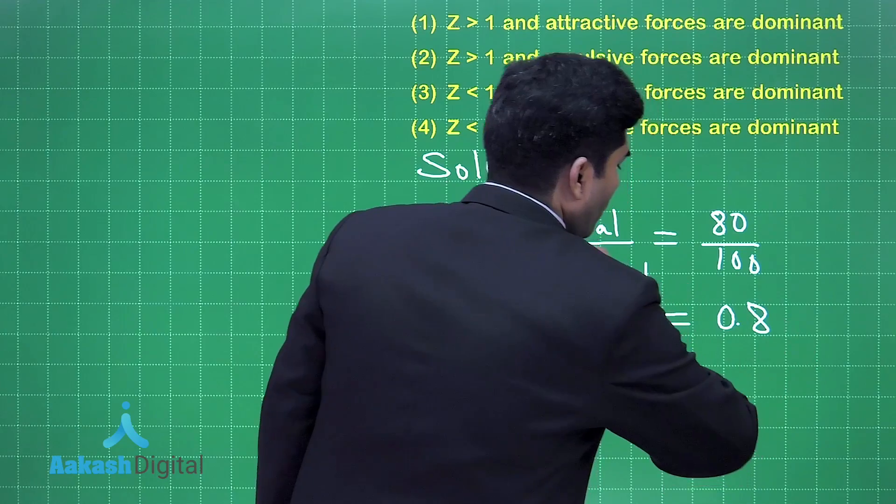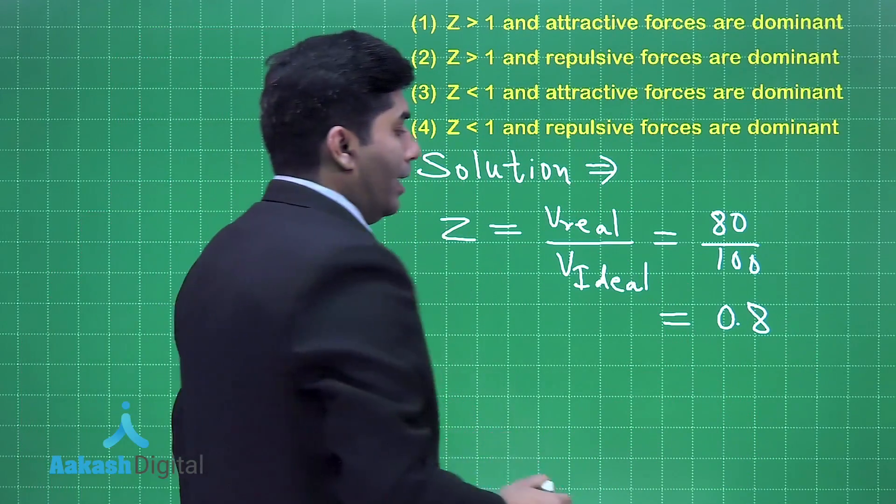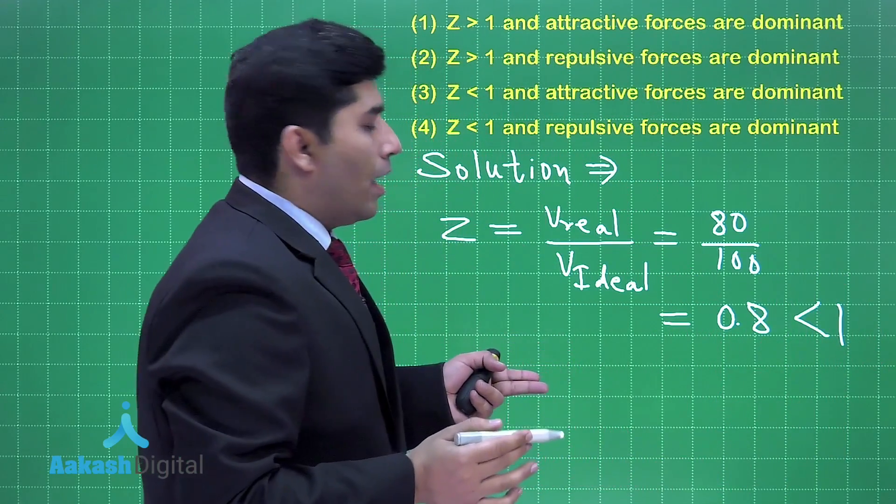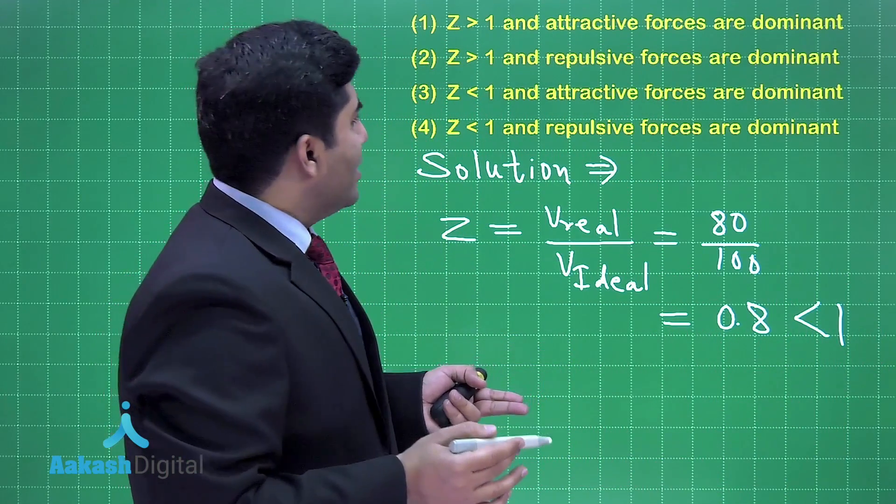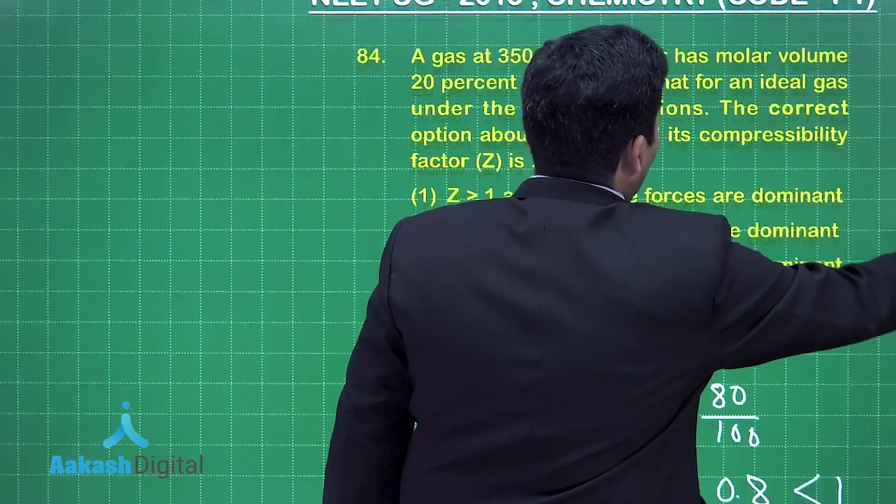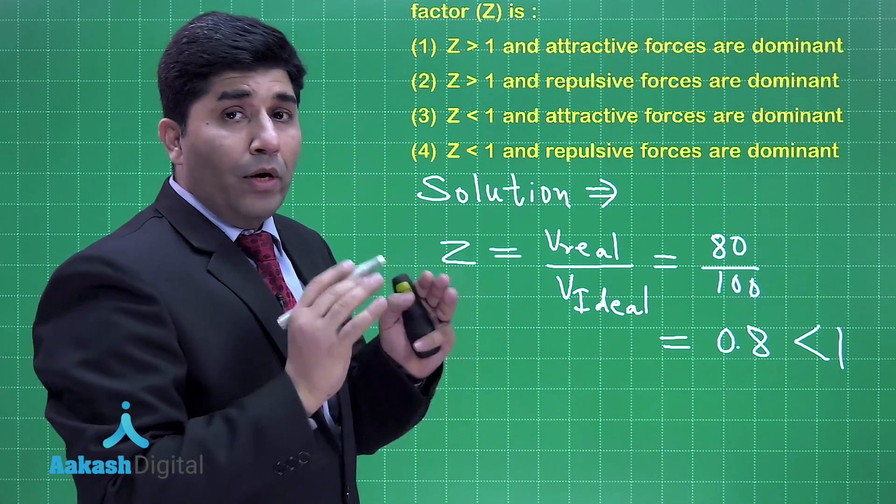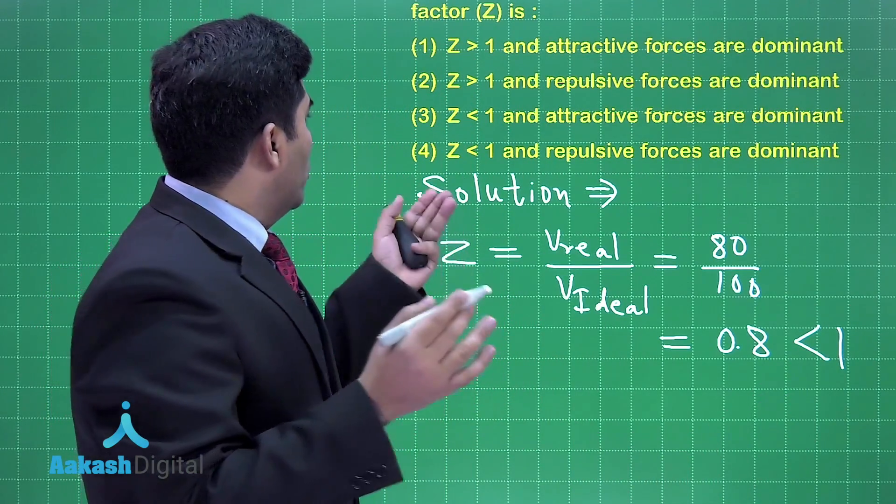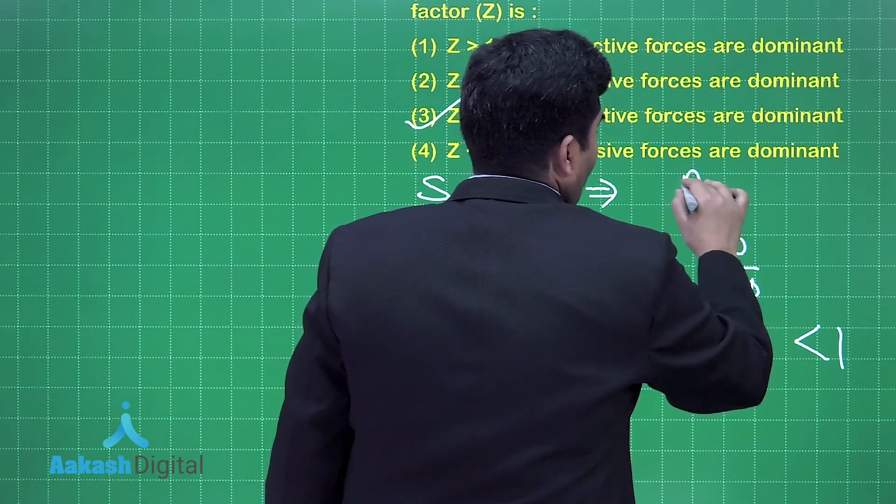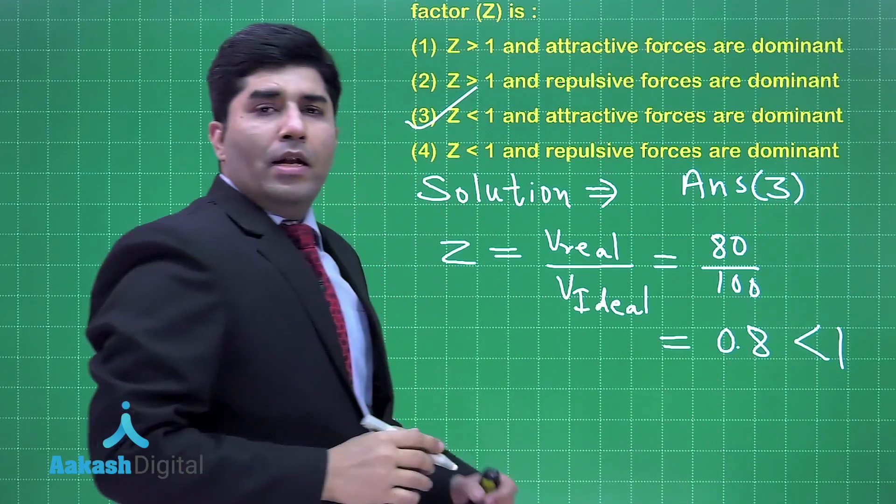And Z = 0.8, and this 0.8 is less than 1, and the gas will be highly compressible. Since 15 bar pressure is not that much high, it means that the forces of attraction between the gas molecules will dominate. So option number three is our correct answer.